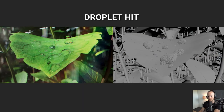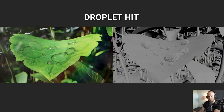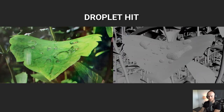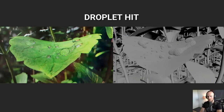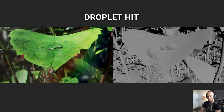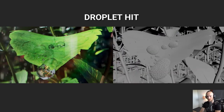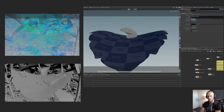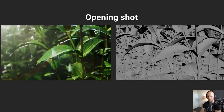I took the photo into Substance Alchemist — or whatever Adobe calls it these days since they renamed everything — and you get all these maps. That holds up a lot better in the closeup. Now we actually have some nice detail on the leaf, whereas it was completely fuzzy when I used the Megascans asset.